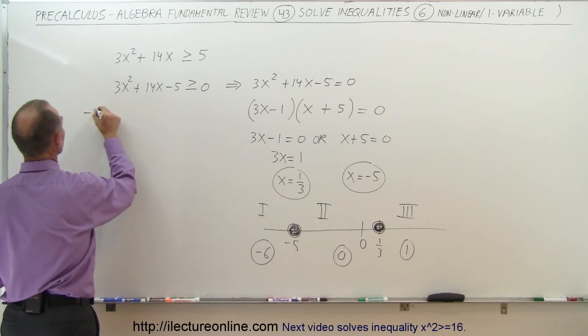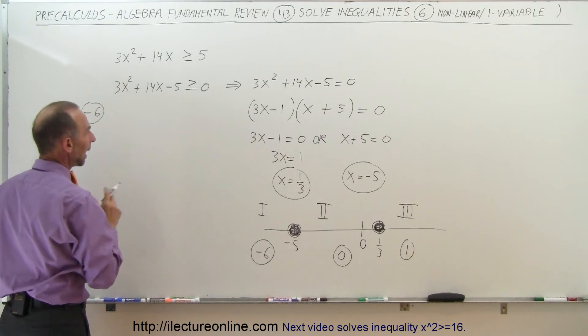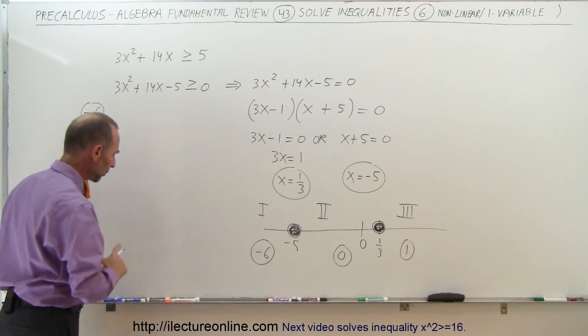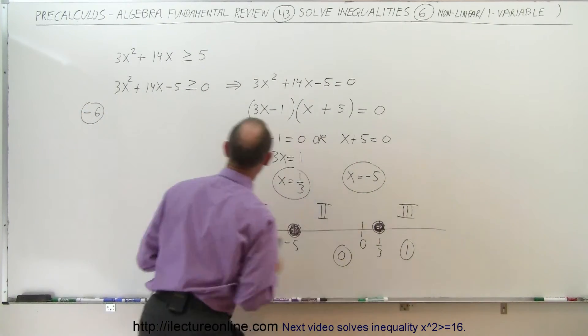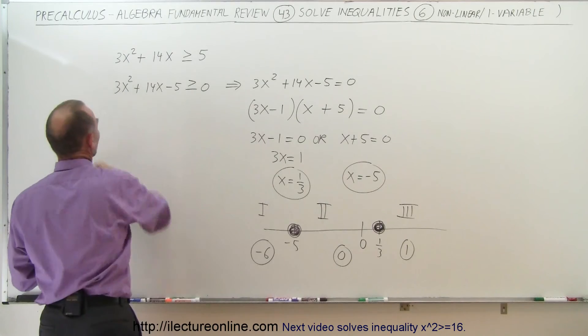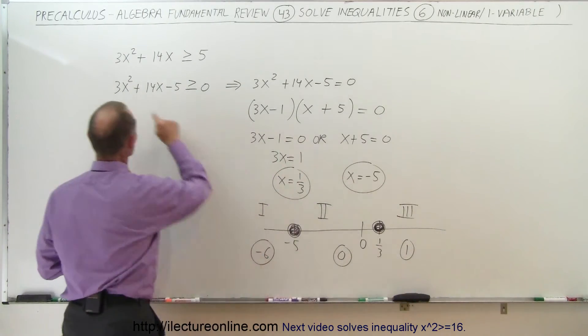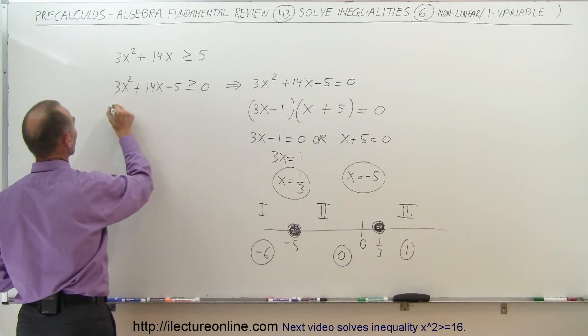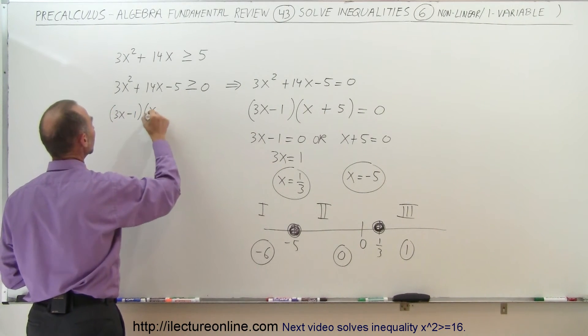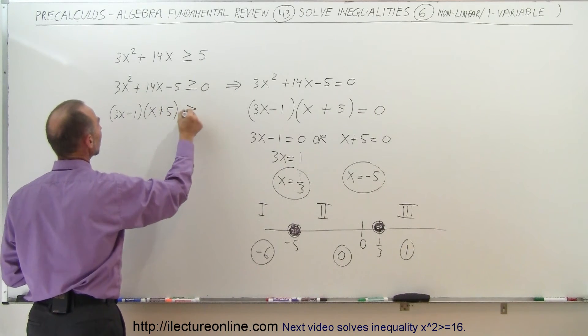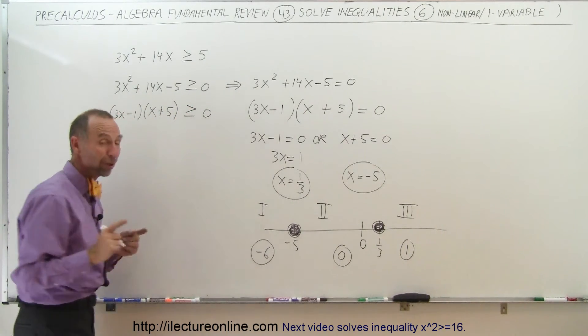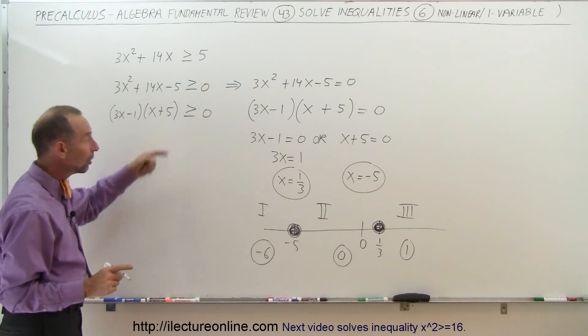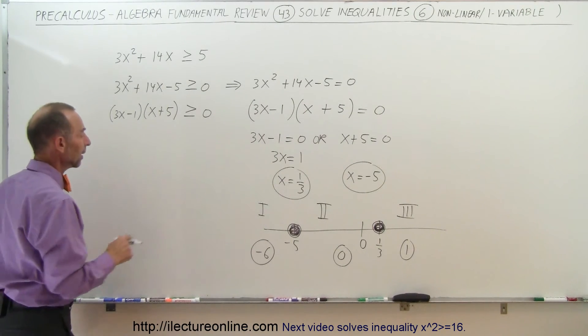Actually, I'm going to do one more step before we do that. Since we found the factored form of this, I'm going to write this in factored form that makes it a lot easier to solve. We can write this as 3x minus 1 times x plus 5 is greater than or equal to 0. Now we're going to plug those three sample points in here to see if we get the solution or not.